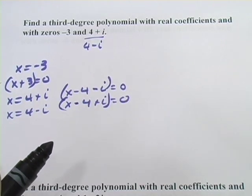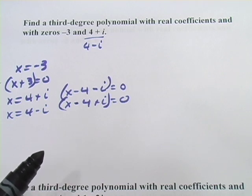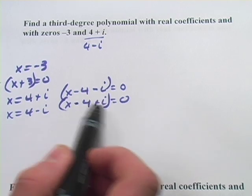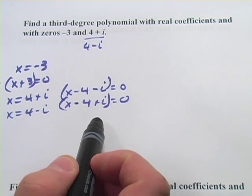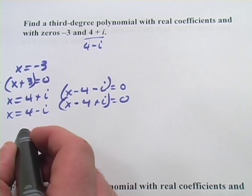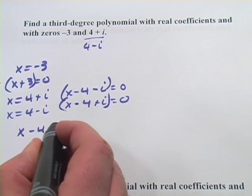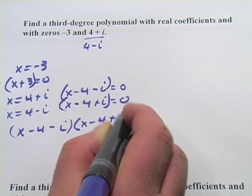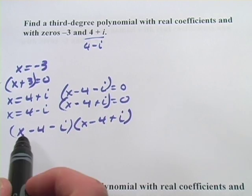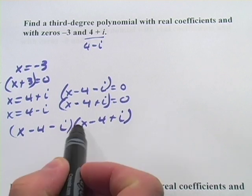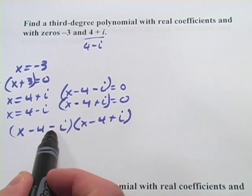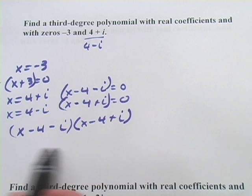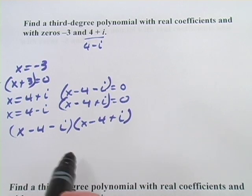Now we have our three factors and we need to multiply them together. I'm going to start with the complex pair because there's some nice canceling that happens. So I'll multiply x minus 4 minus i times x minus 4 plus i. I'll take x and multiply it by all terms, then negative 4 by all terms, then negative i by all terms, and line them up in columns so that terms of the same degree are aligned.